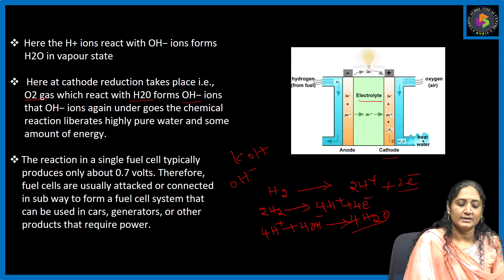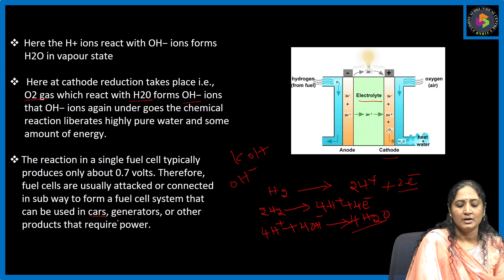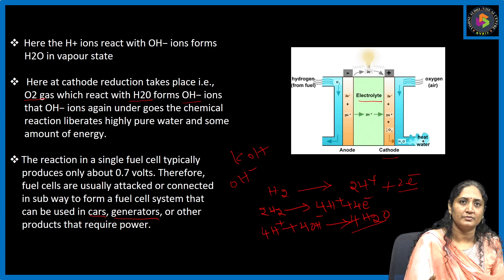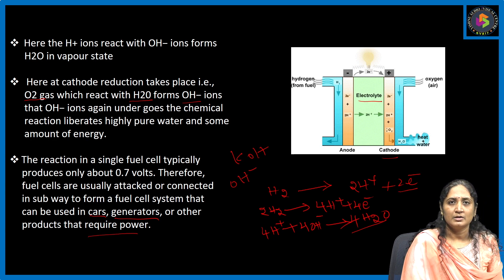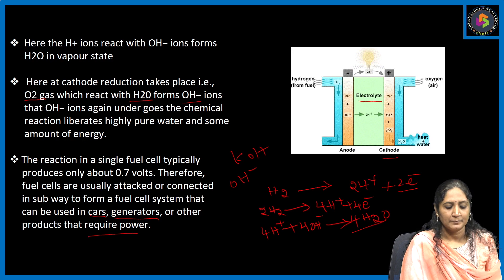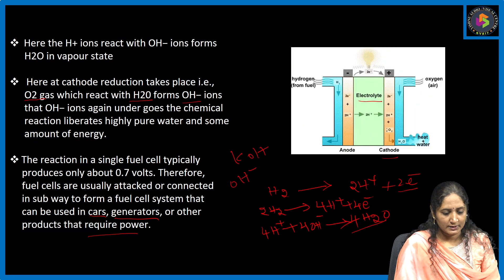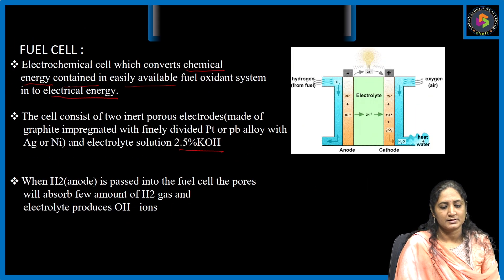We connect a series of cells so that the working takes place continuously for the generation of energy. If you take any car, generators, or other vehicles where energy production is required, we can connect the fuel cells systematically. Now come to the basic chemical reactions which take place.